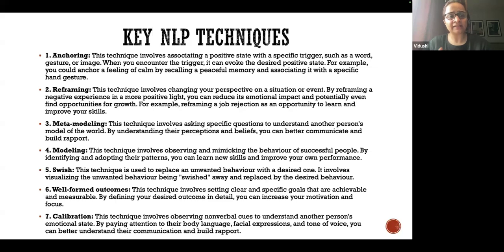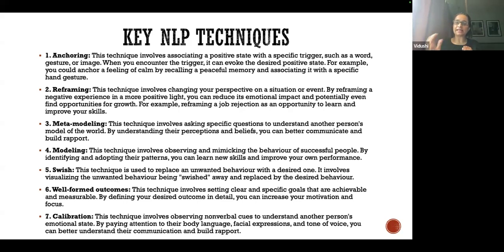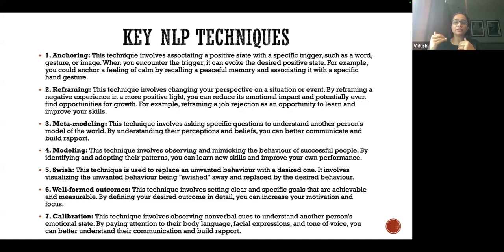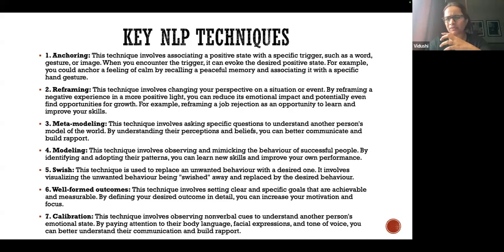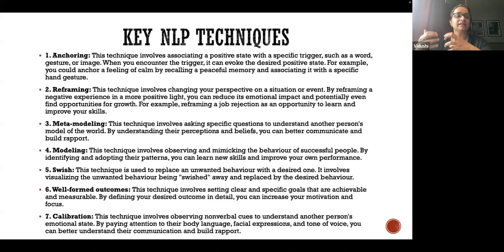The key NLP techniques start with anchoring. This technique involves associating a positive state with a specific trigger — such as a word, gesture, or image — so that when you encounter the trigger, it evokes the desired positive state. For example, you could anchor a feeling of calm by recalling a peaceful memory and associating it with a specific hand gesture. Suppose you want to feel relaxed — you can recall a good vacation from a few months back, which gives you a sense of calmness and positivity. Good positive hormones like oxytocin are released when you think of or do something you really like.